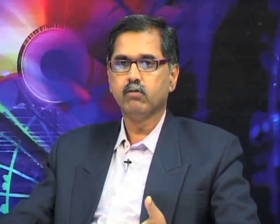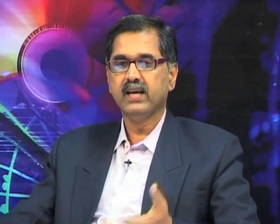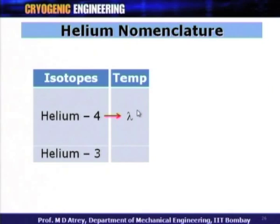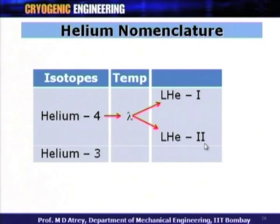To clarify helium nomenclature: helium-3 and helium-4 are isotopes, while helium-1 and helium-2 come from helium-4. Helium-4 has a lambda point which divides it into liquid helium-1 and liquid helium-2. Helium-1 and helium-2 refer to the liquid forms of helium-4 above and below the lambda point, while helium-3 is a separate isotope.